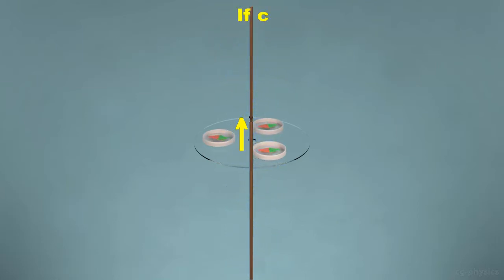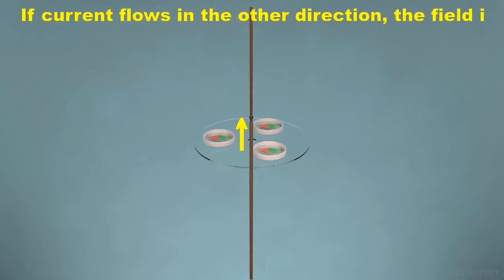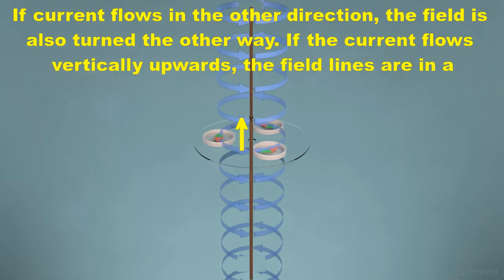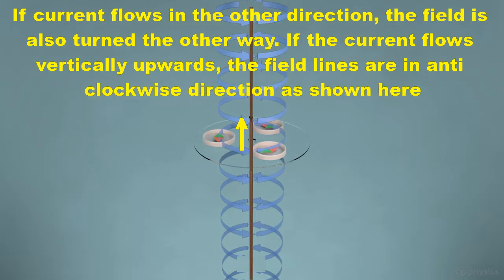If current flows in the other direction, the field is also turned the other way. If the current flows vertically upwards, the field lines are in anti-clockwise direction as shown here.